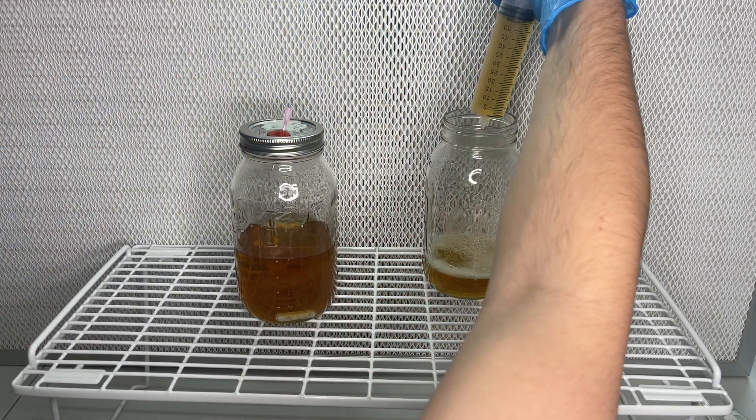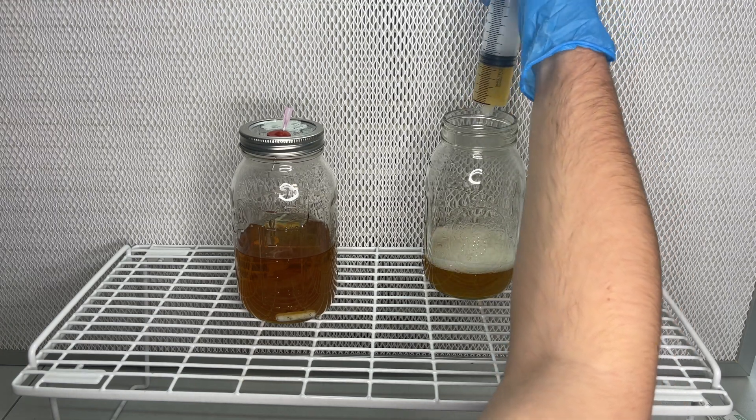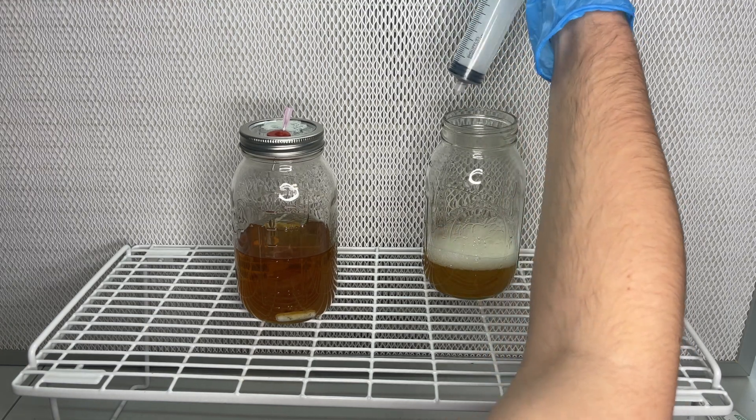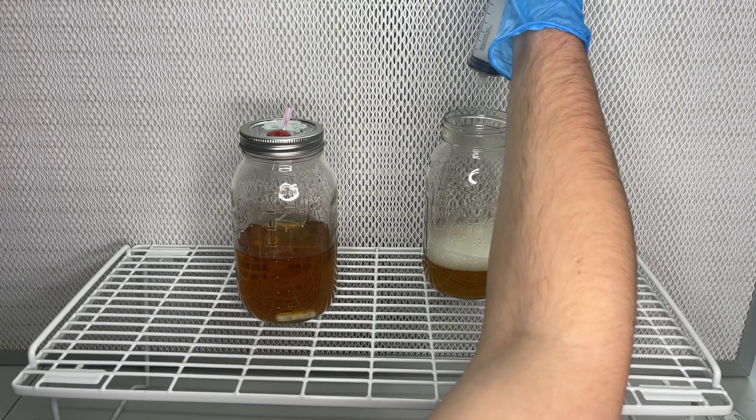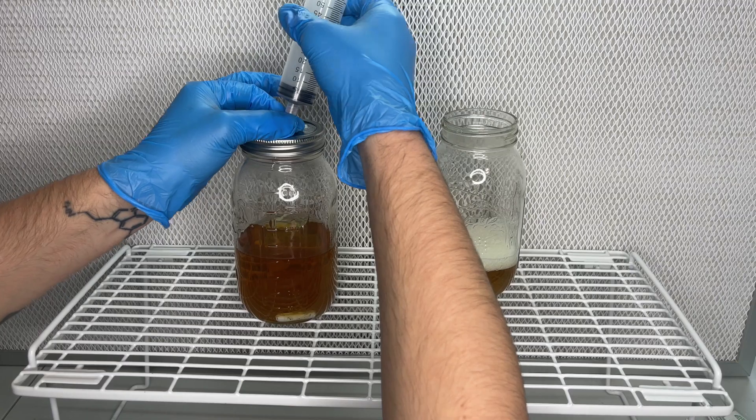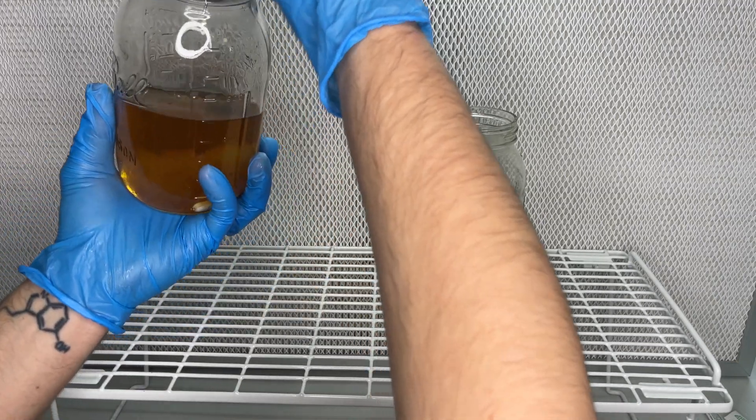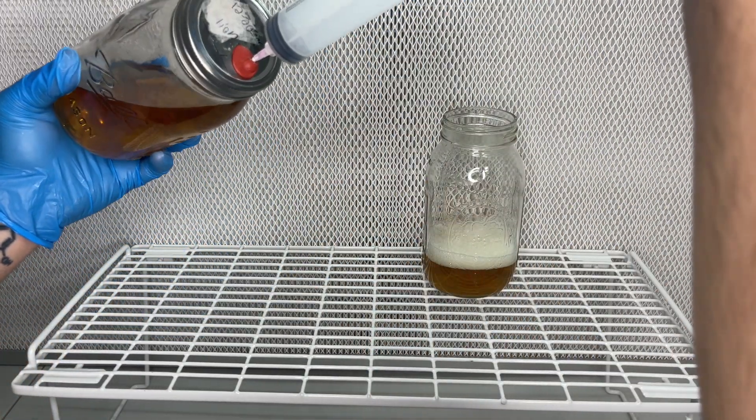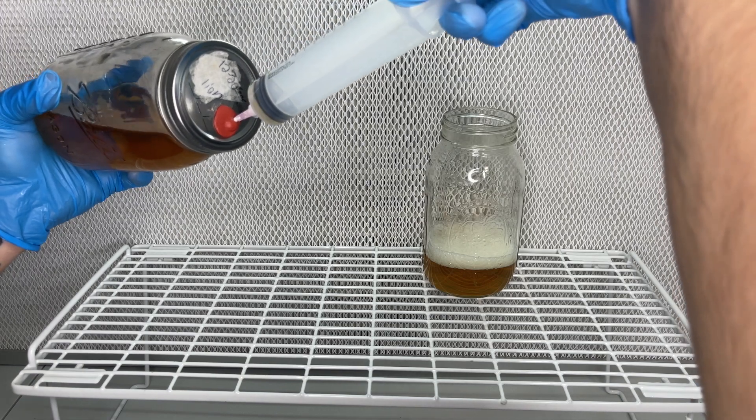Because once you start twirling the jar, the mycelium strands break apart from each other, and then you're just collecting little strands with a lot of liquid. So you'd have to wait for the mycelium to settle to the bottom, and then slightly twirl it and wait for that cloud or clump of mycelium to pass by the needle.